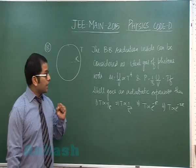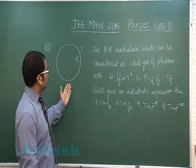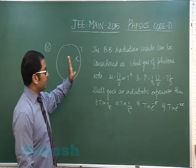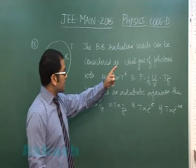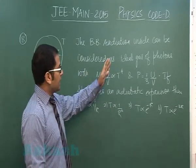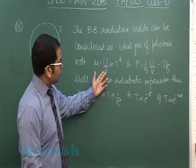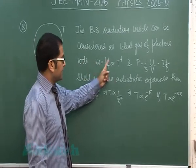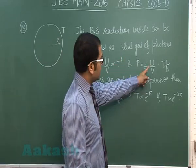Question number 18 is a beautiful question. There is a sphere of radius R at temperature T, and the black body radiation inside can be considered as an ideal gas of photons with internal energy per unit volume, or internal energy density, directly proportional to T raised to the power 4 and pressure as given.